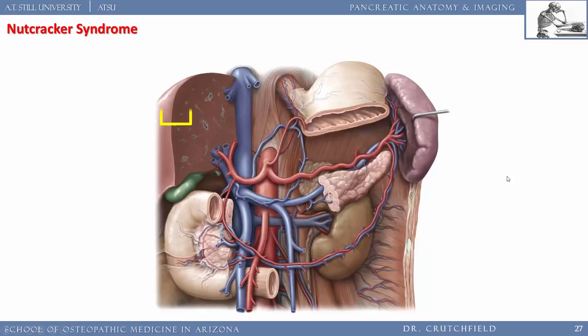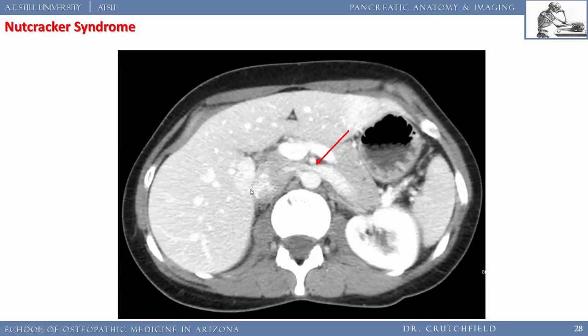Nutcracker syndrome: the superior mesenteric artery — or a congenitally steep-angled version — compresses the left renal vein, causing venous distension in the left kidney and vague abdominal pain. On imaging: vertebral body, aorta, cava, left renal vein being pinched by the SMA. This is likely a congenital condition, not necessarily related to emaciation. I have never knowingly seen this clinically, though it's possible I've missed it.